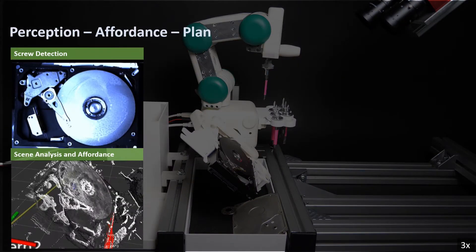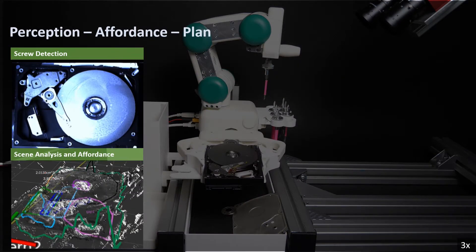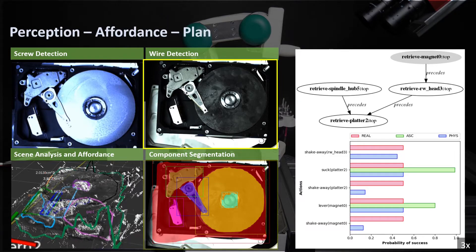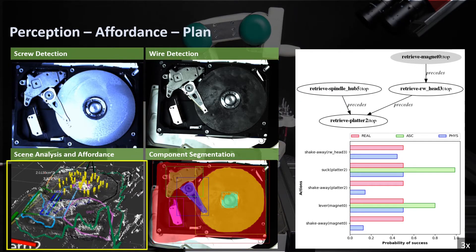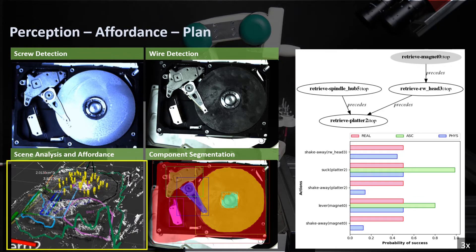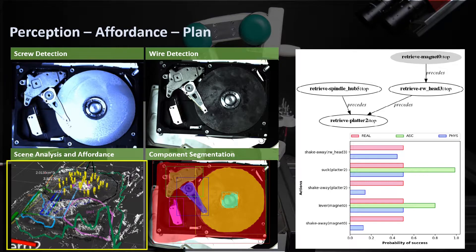Without screws in the scene, the state estimation performs wire detection and component segmentation. Here, we visualize the 3D outlines of each detected part in the scene on the point cloud, as well as the affordances detected by ASC.